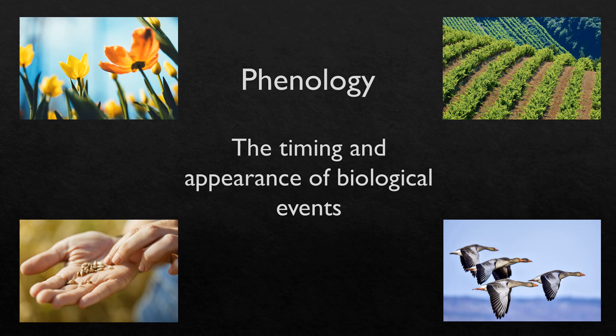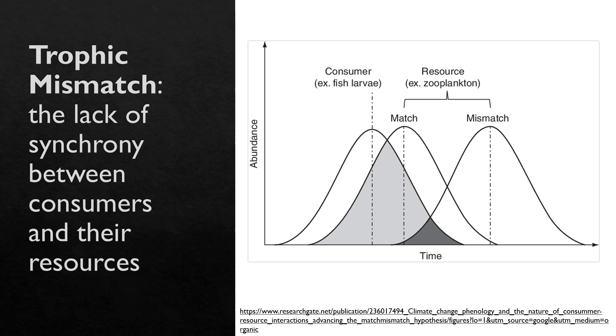The way species interact with each other is often reliant on phenology, but in a changing climate when the timing of a species' life cycle changes, the interactions between species can also change. When interacting species alter the timing of their life cycle phases at different rates, phenological and trophic mismatch can occur.